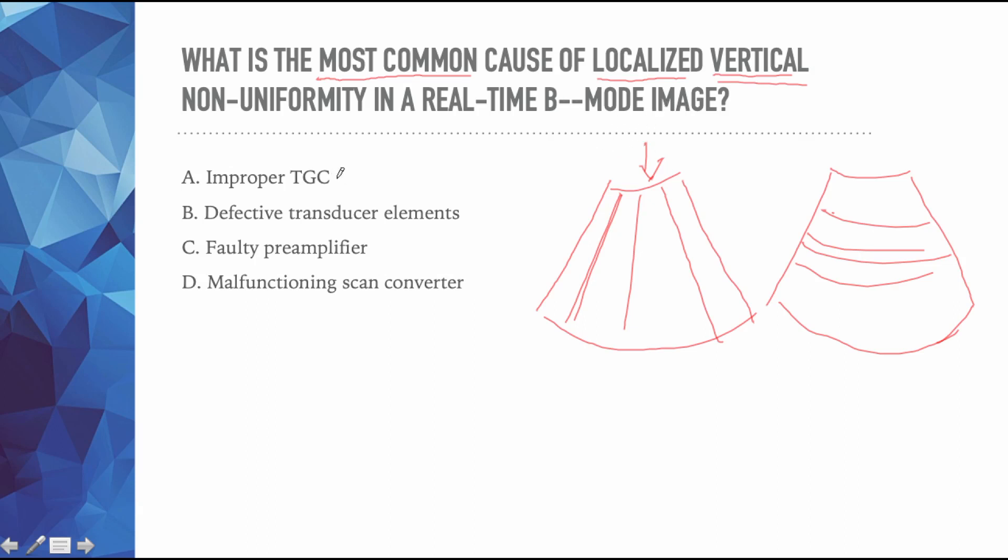So if we have improper TGC, well to me that looks more like this. You have your little pots all over the place, or there's some artifact that's causing something to happen. But that to me would be TGC. B, a defective transducer element. Well that can happen. Let's say one of these little crystals is broken. This one doesn't work and this one doesn't work. Somebody dropped it. You ever get this image and your heart stops? Because you get these vertical bands all the way through the whole image. It's not just in one spot. It actually goes front to back. So that could be it.